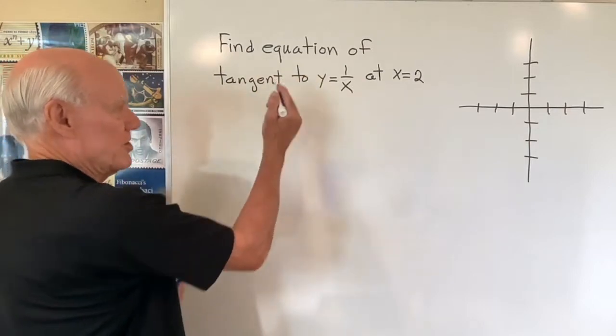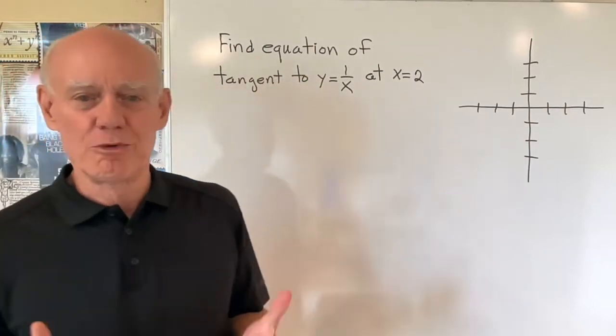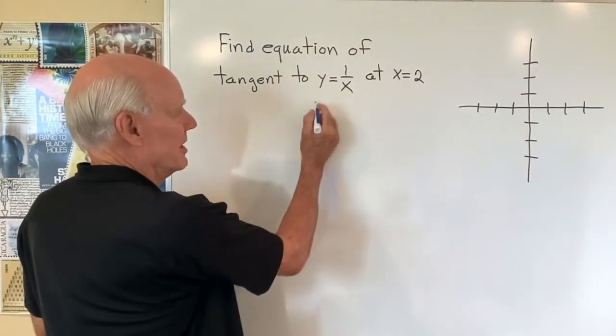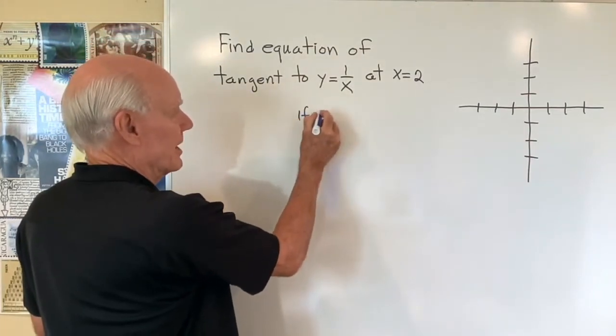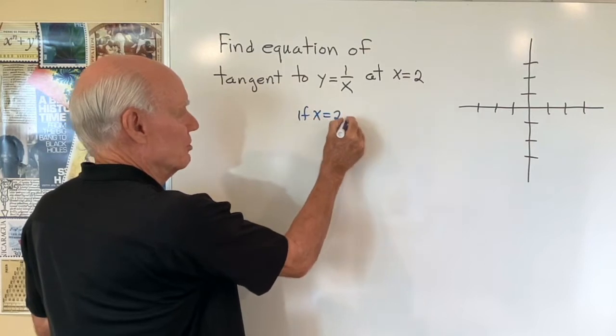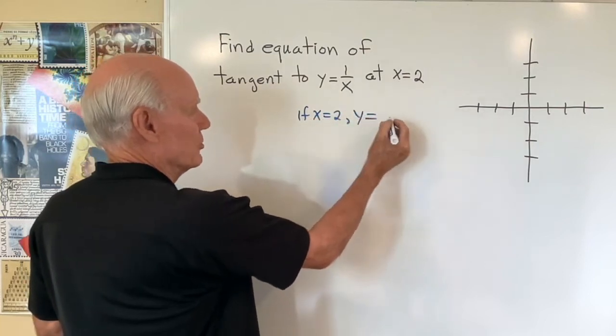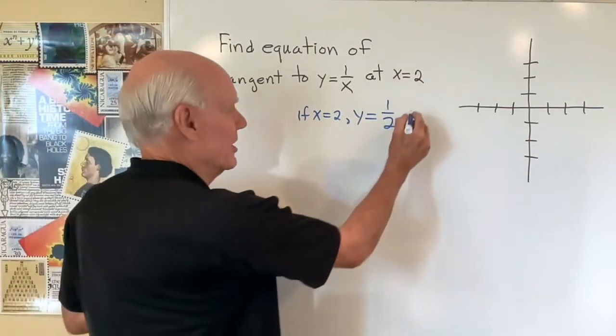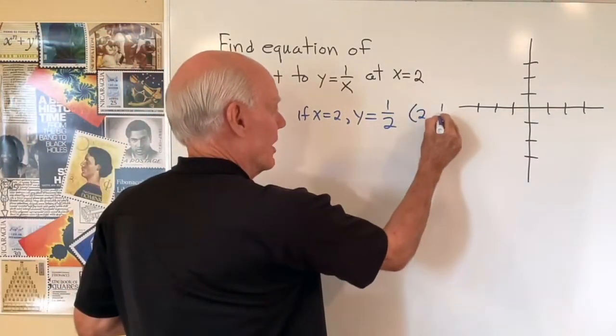So we want to find the equation of the tangent line, so we need the slope and one point on the line. One point on the line would be this: if x is equal to two, y is equal to one over two. So I have a point on the line, x equals two, y equals one half.